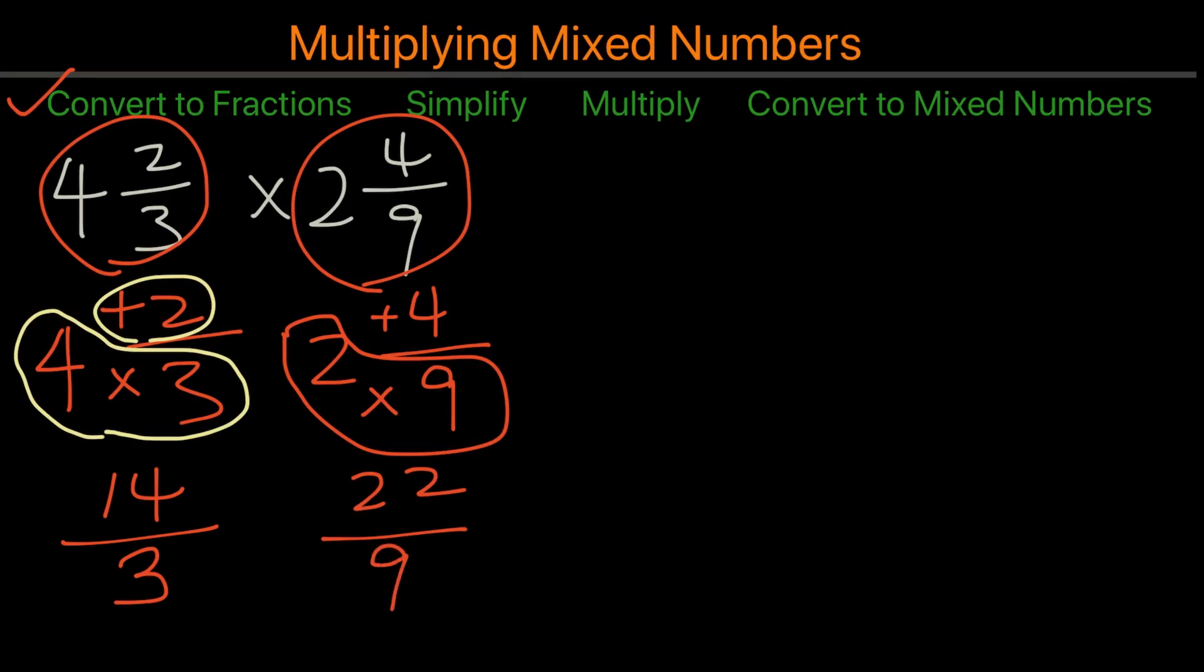And now we're ready to multiply. So when we're multiplying the two fractions, we want to see if any of the numbers can be simplified before we multiply. Now from this example, we don't see any that can be simplified. So therefore, we're just going to times the numerator by numerator and the denominator by denominator. So we'll have 14 times 22, and that gives us 308. And then the denominator of 3 times 9 is 27.